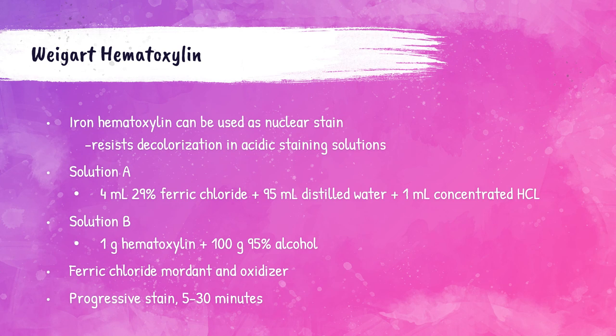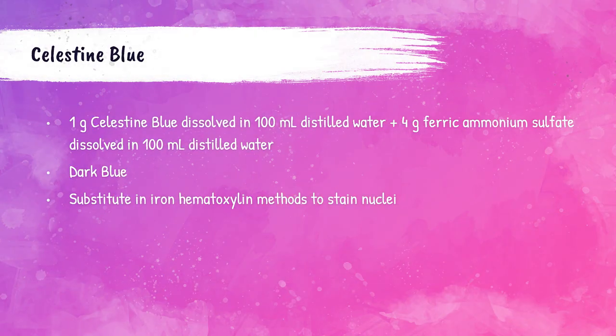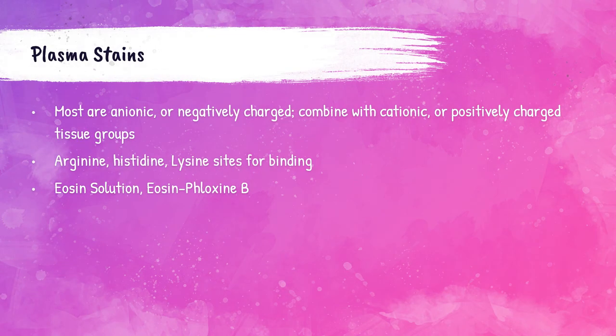Celestine blue may be substituted for hematoxylin in the H&E procedure and gives identical results. Weigert hematoxylin is used progressively for 5 to 30 minutes. Celestine blue is created by dissolving 1 gram of celestine blue in 100 mL of distilled water, and 4 grams of ferric ammonium sulfate dissolved in 100 mL of distilled water. Once both solutions are dissolved, they are mixed together, filtered, and used as a dark blue solution. Celestine blue is used as a substitute in iron hematoxylin methods to stain the nucleus.